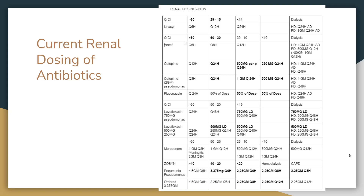So what you want to do first: I created this chart about a year ago, so I'm not even 100% sure these are up to date, but they're close. This is a current renal dosing of antibiotics chart. If you look on the left side, you'll have the drugs, antibiotics, and then you can see there are a couple lines with the creatinine clearance ranges. The top one is Unison. If the patient has a creatinine clearance above 30, you could do Q6 dosing. If it's between 29 and 15, it would be Q12 dosing, and if it's less than 14, it would be Q24 dosing.